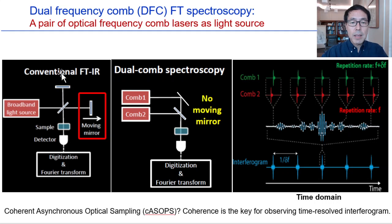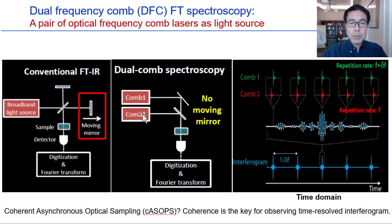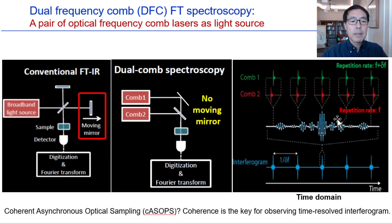In a conventional FTIR spectrometer, there is a moving mirror and fixed mirror; the speed of the moving mirror divided by the speed of light is the down-conversion factor, allowing measurement of ultra-fast processes like free induction decay. On the other hand, two frequency combs with slightly different repetition frequencies generate two pulse trains with slightly mismatched time intervals at every repetition period. Therefore, time-domain interferograms can be recorded at hundreds of megahertz sampling rate, and Fourier transformation provides a spectrum in the microwave frequency domain which is then converted to the optical frequency domain.